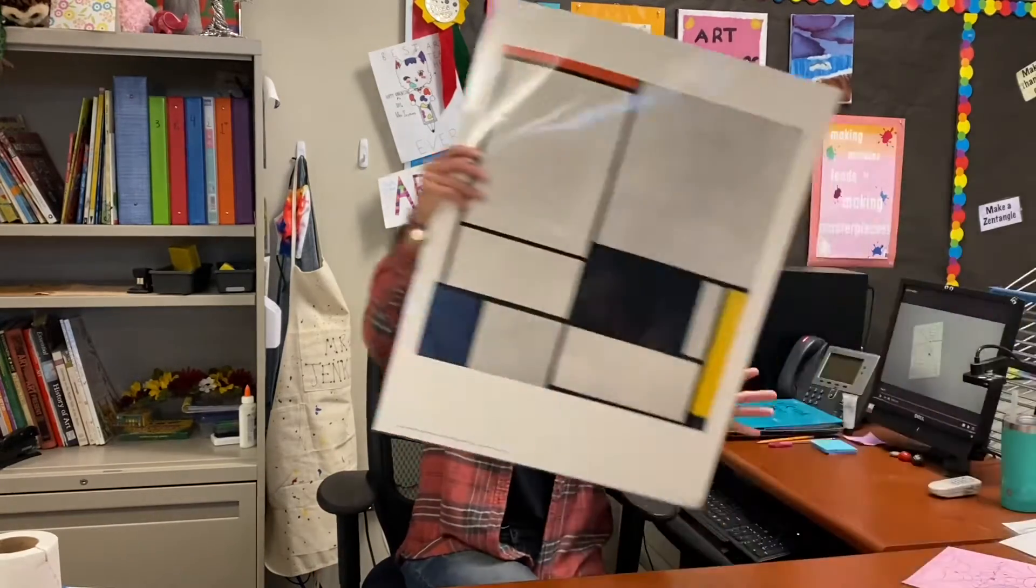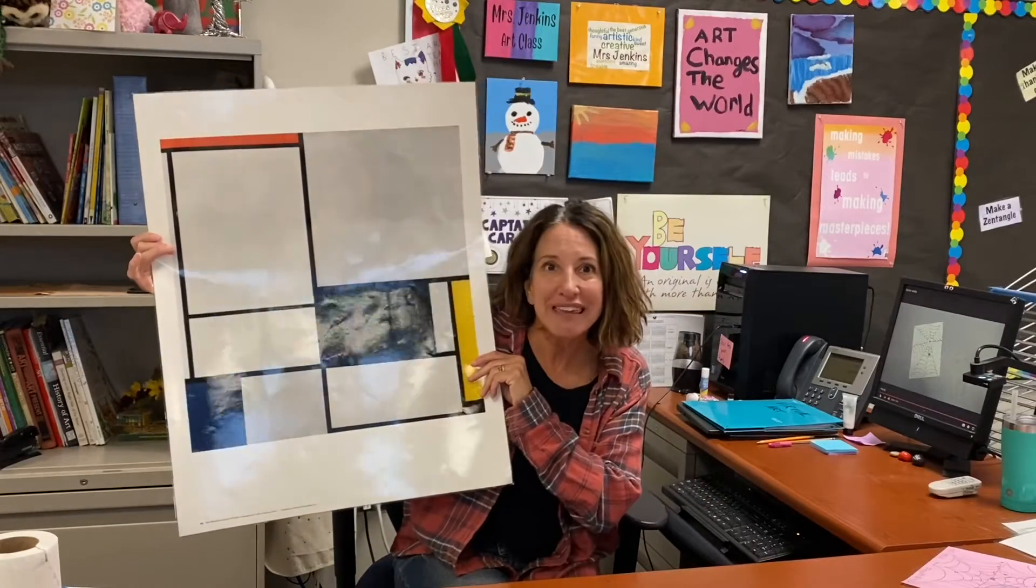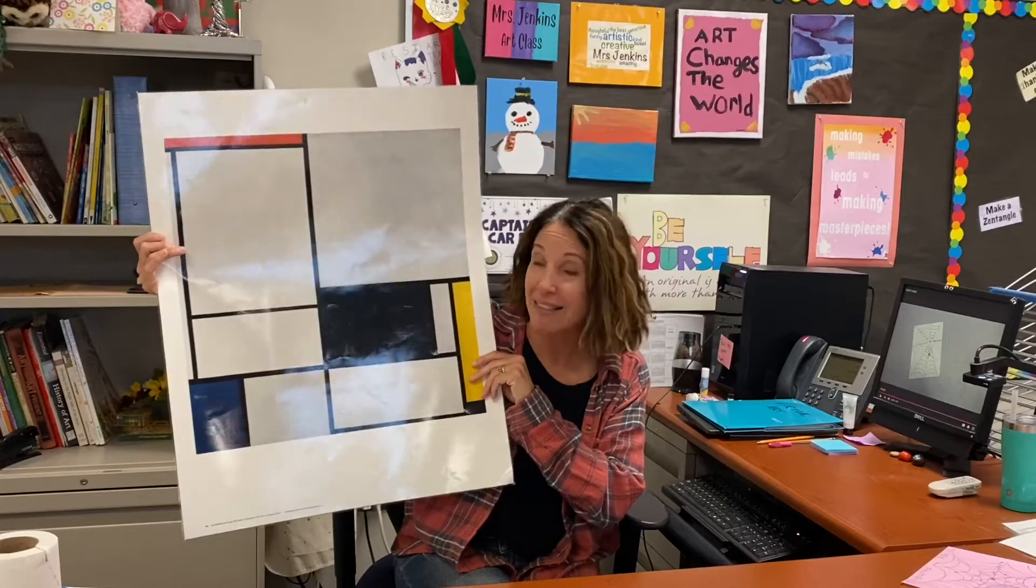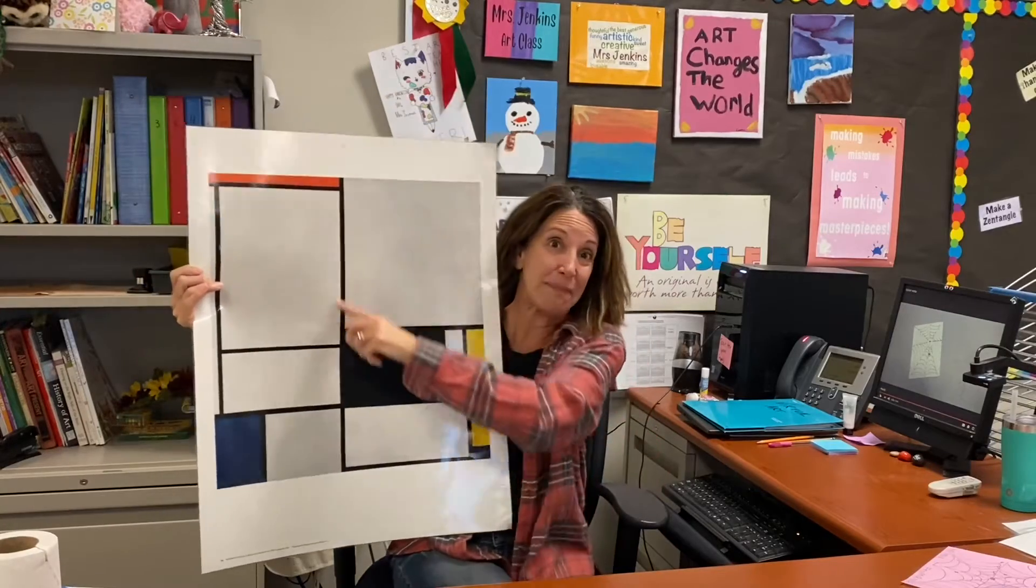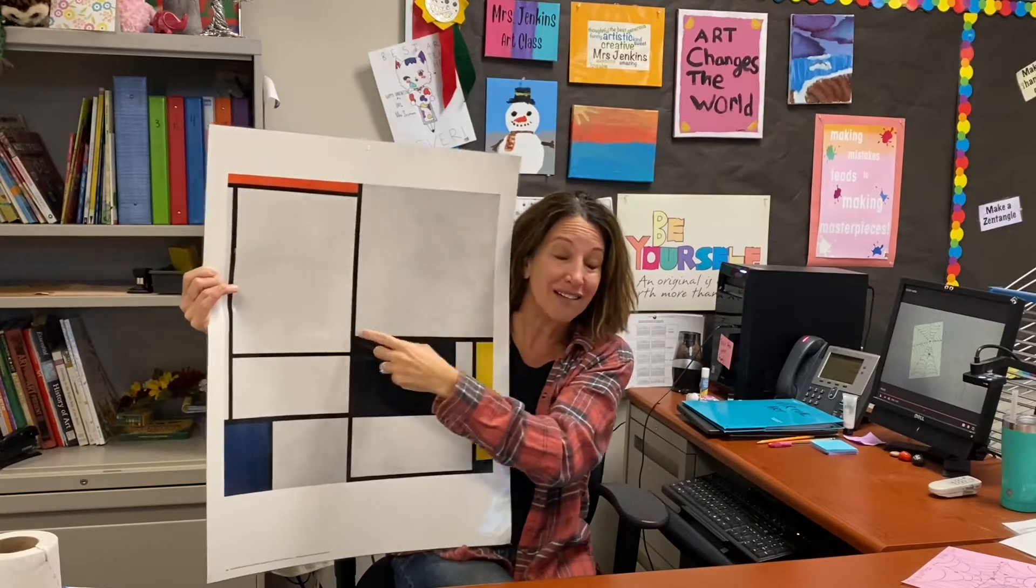Piet Mondrian was an artist from Holland who loved to use a couple of things. Some of them were black lines. We can see in this painting he uses black straight lines, vertical and horizontal.